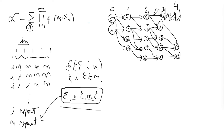When computing probabilities, you could manually trace all sequences through the graph, computing the probability for each. However, there is overlap where the same computation is done twice. The dynamic programming algorithm removes this redundant computation by going step by step, always using the previous step's computed probabilities.